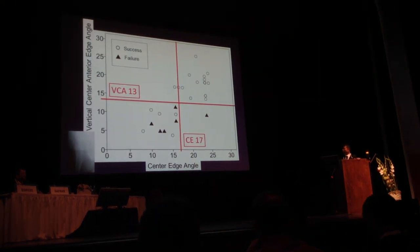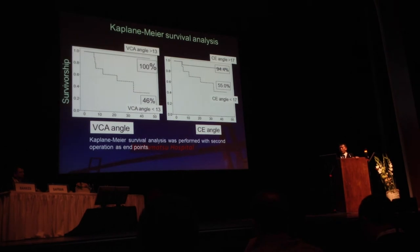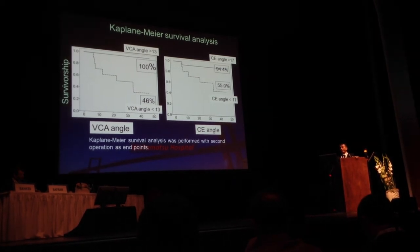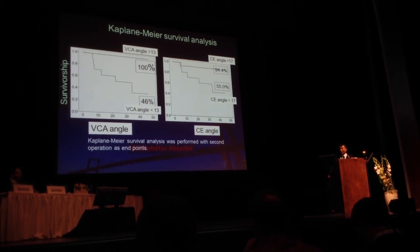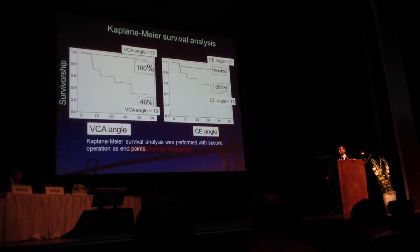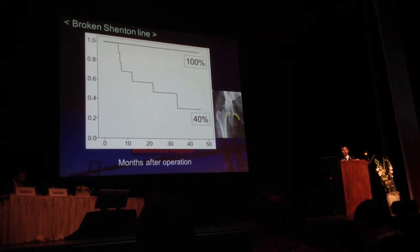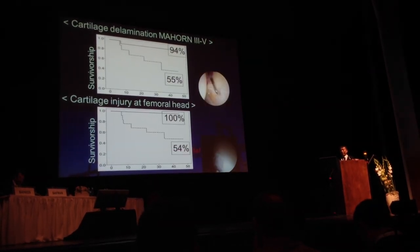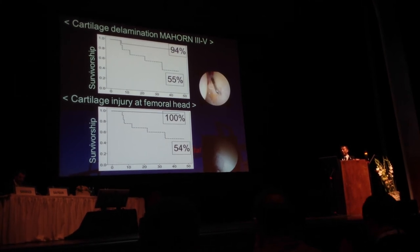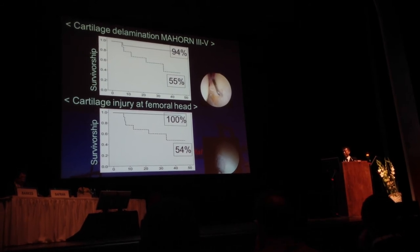The graph shows the VCE angle and CE angle cut-off values: VCE angle at 30 degrees and CE angle at 60 degrees. If the VCE angle is less than 13 degrees, the survival rate is only 46%. If the CE angle is less than 17 degrees, only 55% survival rate. If the patient has a broken Shenton line, only 40% survival rate. If the patient has cartilage damage in the labral region and cartilage injury of the femoral head region, only 50% survival rate.